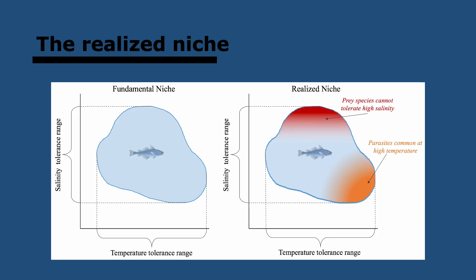Leading on from this, the range of tolerances is the fundamental niche of a species. The fundamental niche basically means that if the species were living without any competitors, it would occupy that entire fundamental niche because it can live within that range. For example, within this range of salinity and temperature, this species of fish can live. With no competitors, it would occupy the entire fundamental niche.